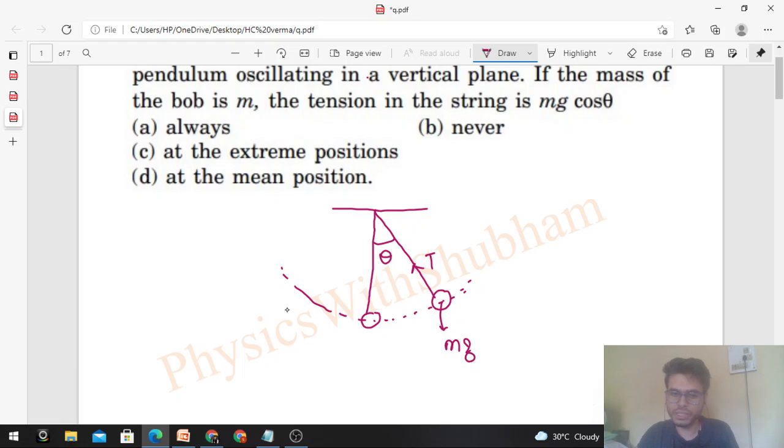In the radial direction we have mg cos θ, and in the tangential direction we have mg sin θ.